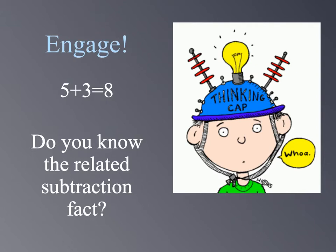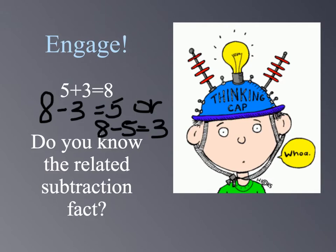So let's engage. Look at the fact 5 plus 3 equals 8. Do you know the related subtraction fact? Think about this for just a moment. If you answered 8 minus 3 equals 5 or 8 minus 5 equals 3, you'd be correct. And I want you to notice that we're using the same whole and the same parts for each of these facts. And think about this for just one moment. How does the subtraction facts that you wrote undo the addition fact?